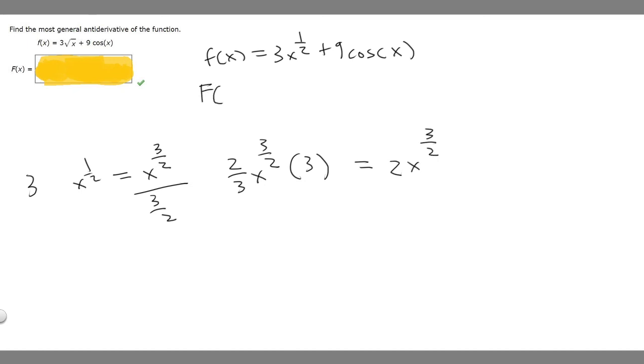So we have uppercase F of x is going to be 2x to the 3 over 2. Then we need to find the antiderivative of 9 times the cosine of x. We know the antiderivative of cosine of x is sine of x. We're just multiplying it by 9, so it's 9 times the sine of x.